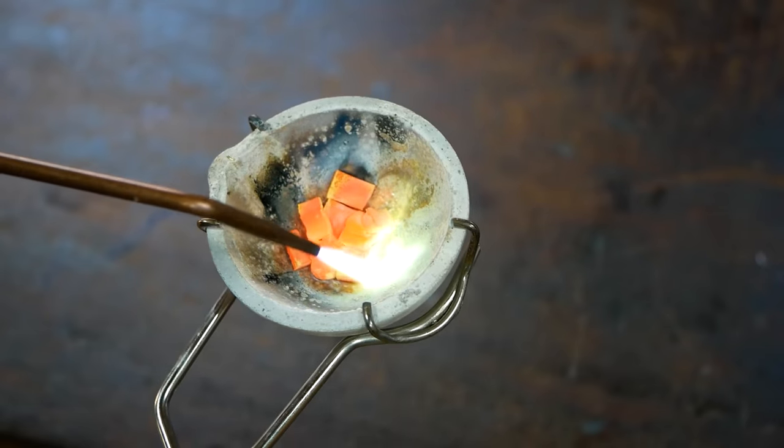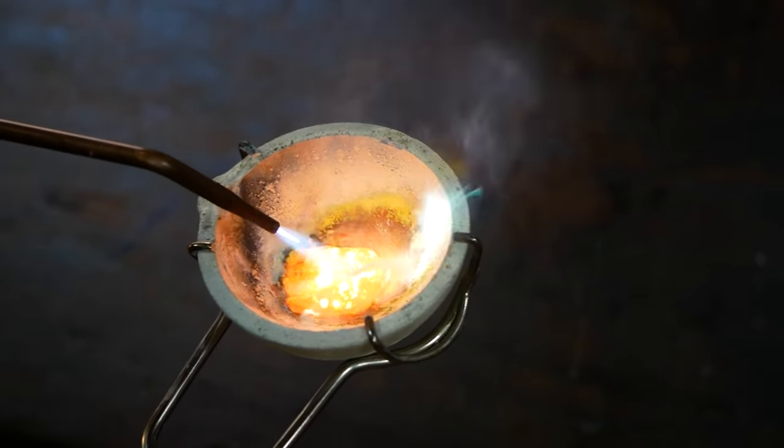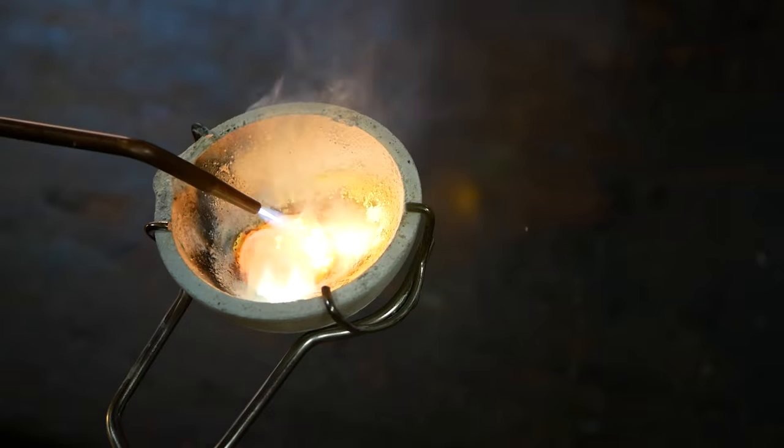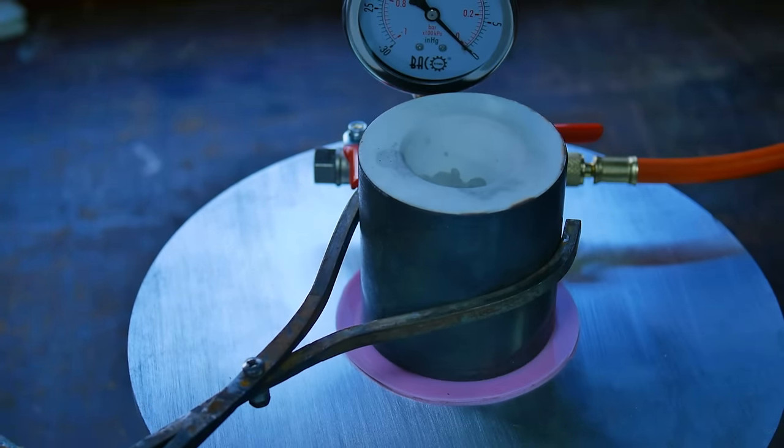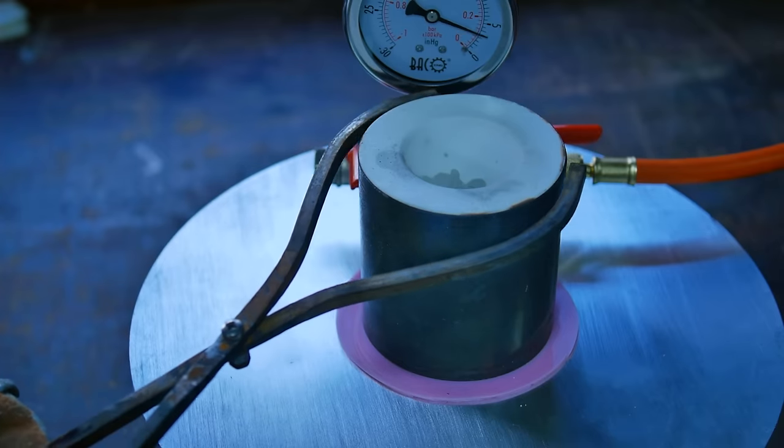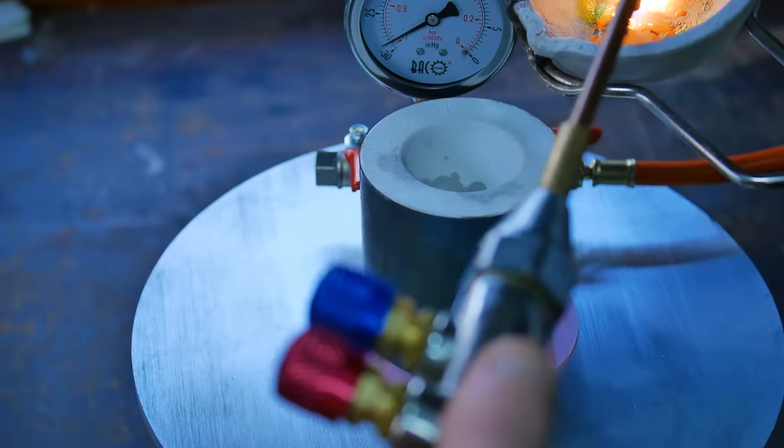The flask is removed from the furnace at around 650 degrees centigrade to pour the molten metal into now what is hopefully a flywheel shaped cavity. The hot flask is placed over a hole in the vacuum chamber to help suck the metal into the mold cavity.